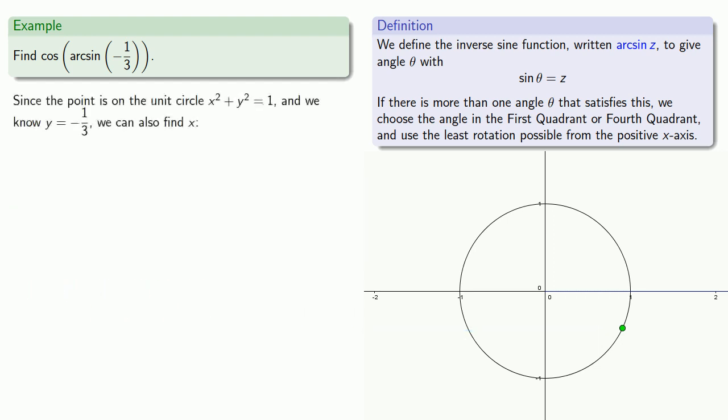Since the point is on the unit circle x squared plus y squared equals 1, and we know y equals minus 1 third, we can also find x. Now, the equation has two solutions, plus or minus square root of 8 ninths. But since the point is in the fourth quadrant, we know that x has to be the positive solution, square root of 8 over 9.